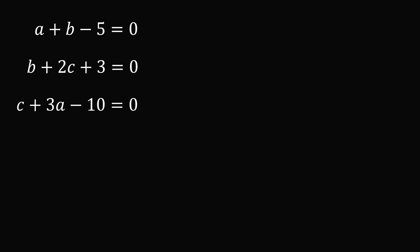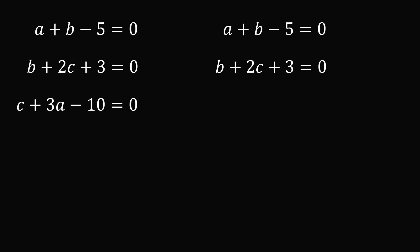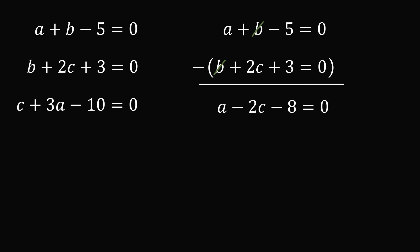Here's one way to do that. Let's take the first and second equations, and subtract the second equation from the first equation, eliminating the b variable. This leaves a minus 2c minus 8 is equal to 0, which means a is equal to 2c plus 8.